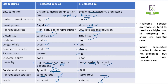r-selected species tend to produce a higher number of offspring but provide less parental care. K-selected species produce fewer offspring but invest more parental care. A good example of r-selected species includes organisms like frogs, while K-selected examples include larger mammals with individual importance placed on each offspring.